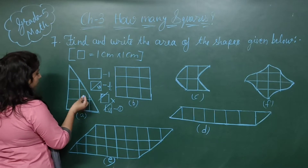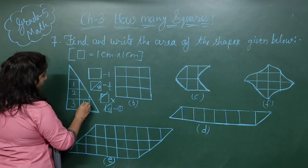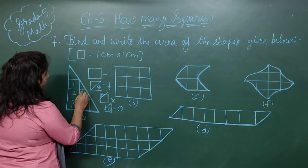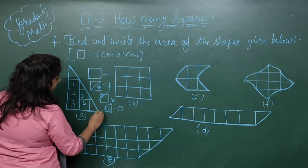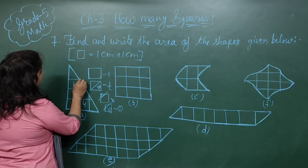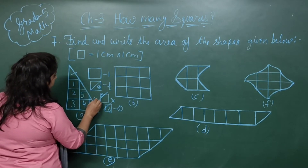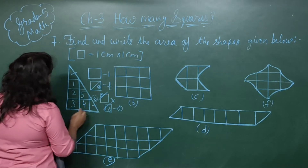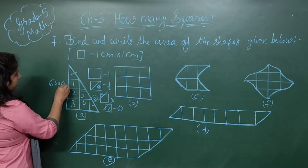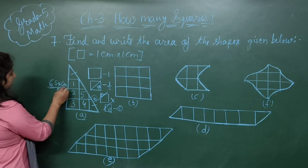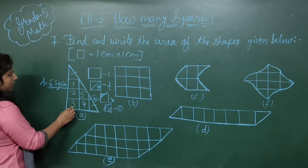In picture number 8, we can see complete squares: 1, 2, 3, 4. This part is more than half, so we count it as 5. And combining the remaining more-than-half and half parts, we get 6. So the area of this first shape is 6 square centimeters.